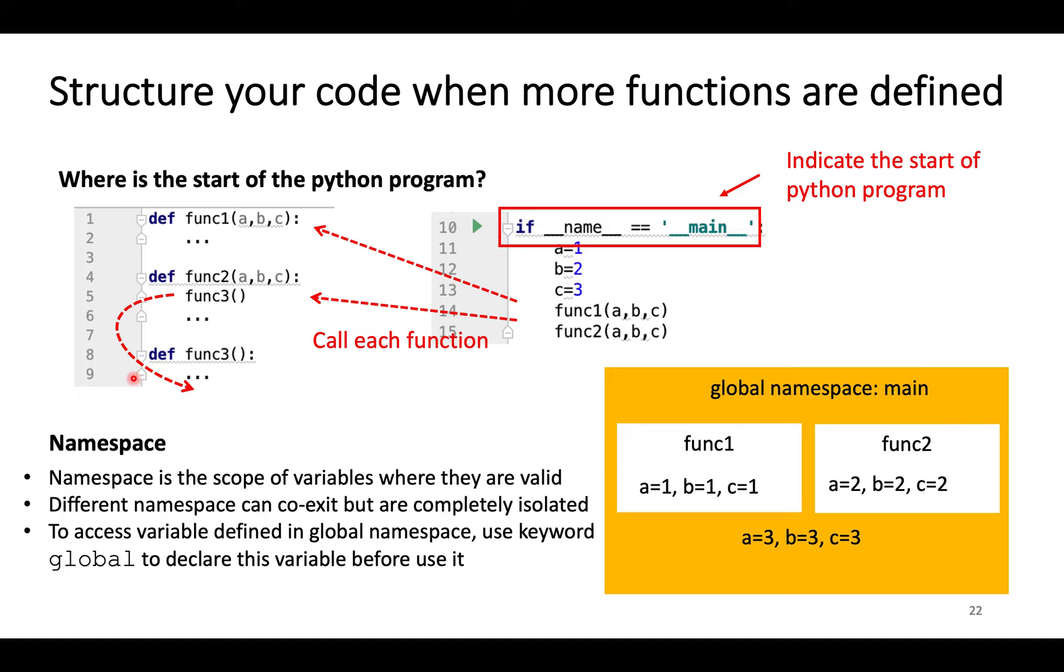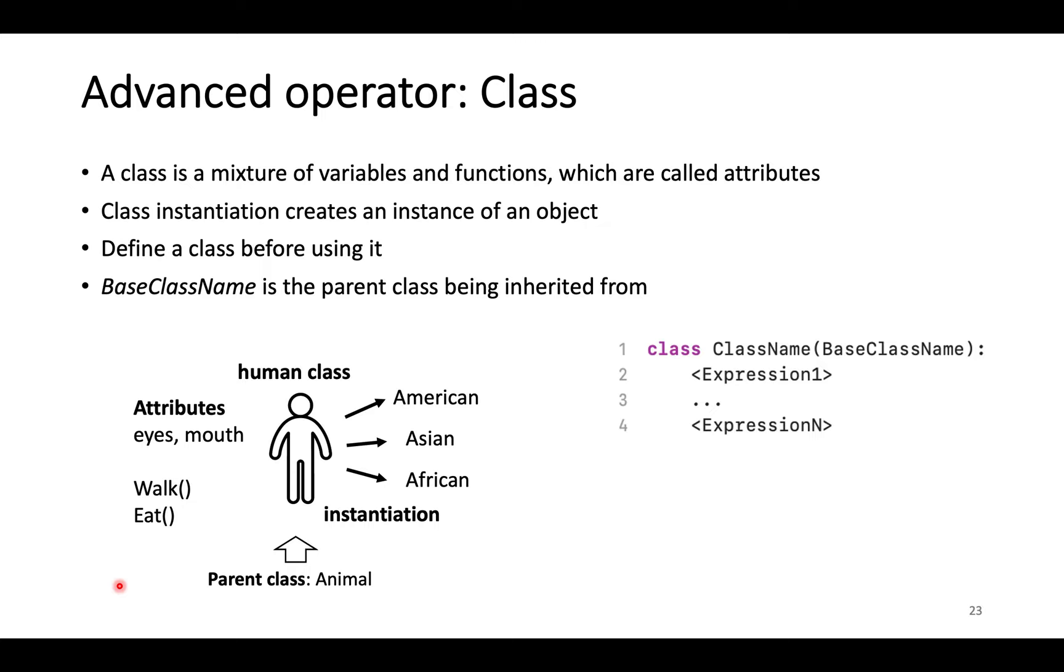Python uses namespace. Namespace is an isolated scope where variables are valid. So function 1 and function 2 have local namespaces, and the main program has a global namespace as well. The A, B, C variables can have different values in different namespaces. But if you want to change variables in global namespace, you need to clarify its global property by the global keyword before using it.